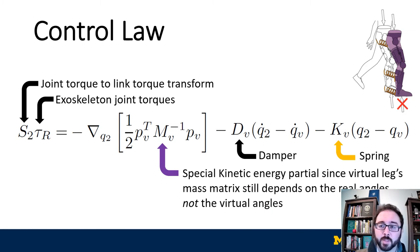Our control law defines the exoskeleton joint torques tau sub R, transformed by the matrix S sub 2, which is related to our parametrization in terms of link rather than joint angles, as the sum of three terms, which are right to left: the torque from the virtual spring, a torque from a virtual damper that acts similarly to the virtual spring, and a special kinematic coupling term that results from our definition of the virtual leg mass matrix as a scaled version of the real leg mass matrix.